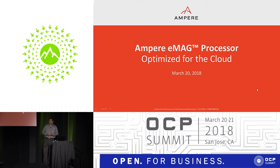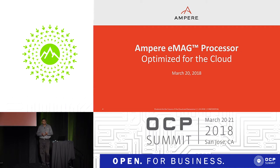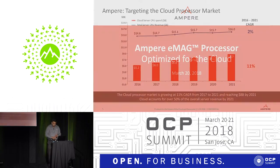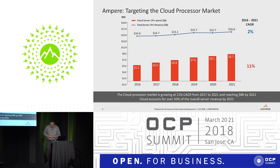What we're going to talk about is the Ampere EMAC processor that is optimized for the cloud, and that's what we're launching here today at the show. You saw the executive management team — we are a newly formed company, a fabulous semiconductor company based in the Bay Area. The processor we're building is called EMAC.